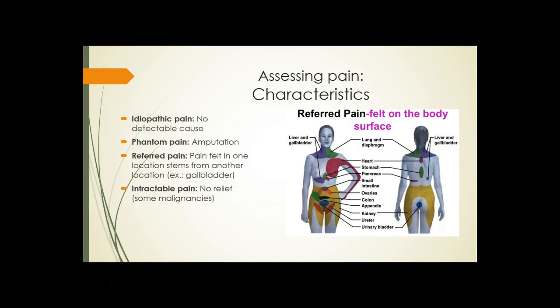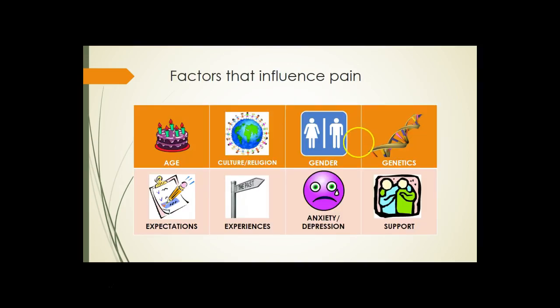There is idiopathic pain, which has no detectable cause; phantom pain, as it relates to amputations; referred pain, which is felt in one location but stems from another location; and intractable pain, which has no relief and is usually related to malignancies. Factors that can influence pain are kind of evident on the page.